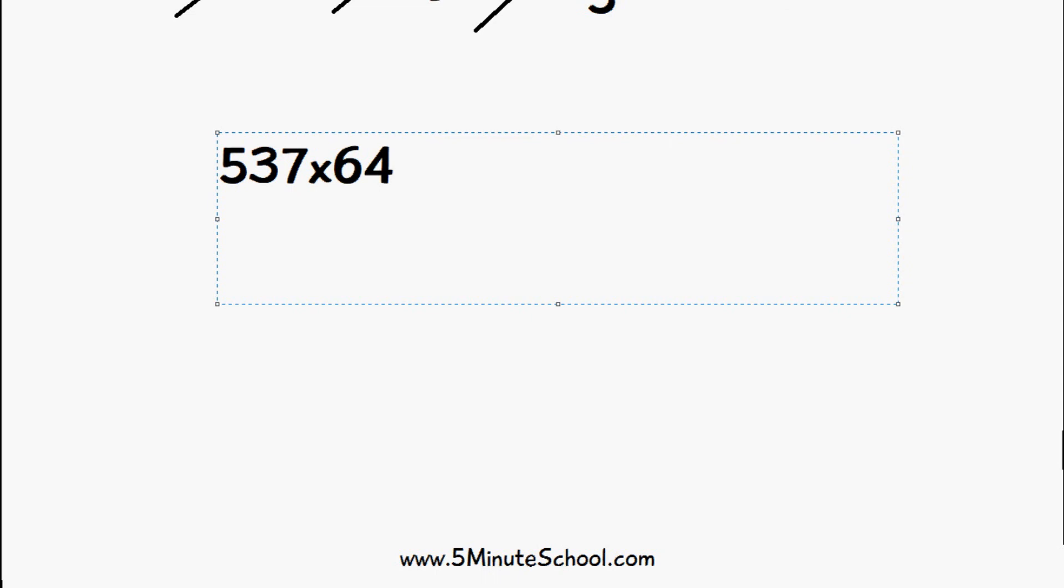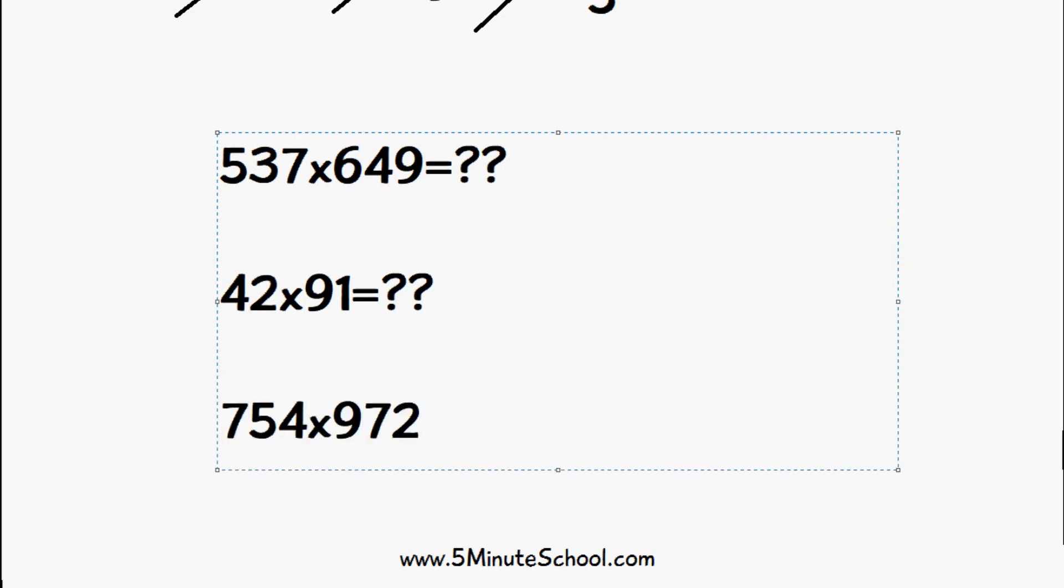I'm going to leave you with some test questions, so see if you can work these out. We have 537 times 649, we have 42 times 91, and we have 754 times 972.